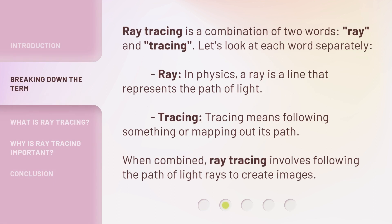Ray tracing is a combination of two words: ray and tracing. Let's look at each word separately. Ray — in physics, a ray is a line that represents the path of light. Tracing means following something or mapping out its path. When combined, ray tracing involves following the path of light rays to create images.